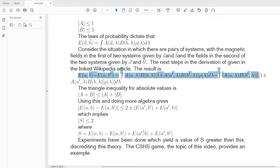Now experiments have been done which give a value of S greater than two. This discredits the hidden variable theory, and it's one reason why quantum mechanics is accepted today as valid, even though perhaps none of us really understand it completely. The CHSH game, the topic of this video, provides an example of the violation of this inequality.